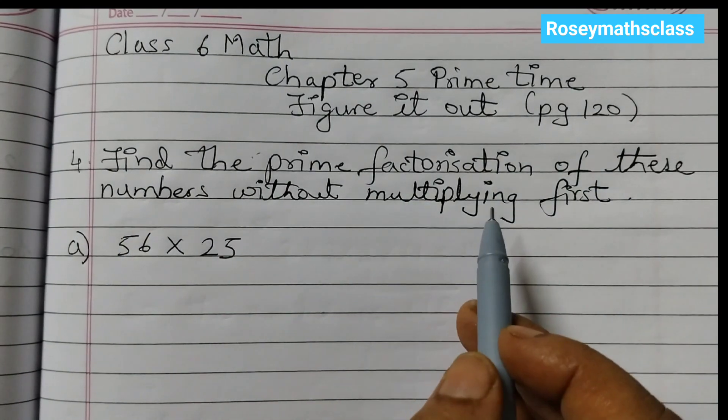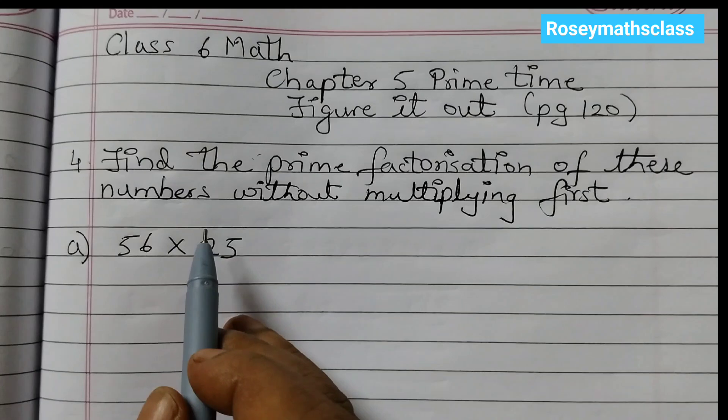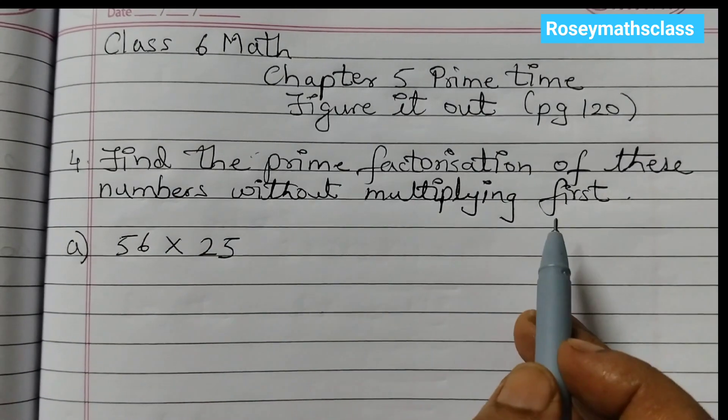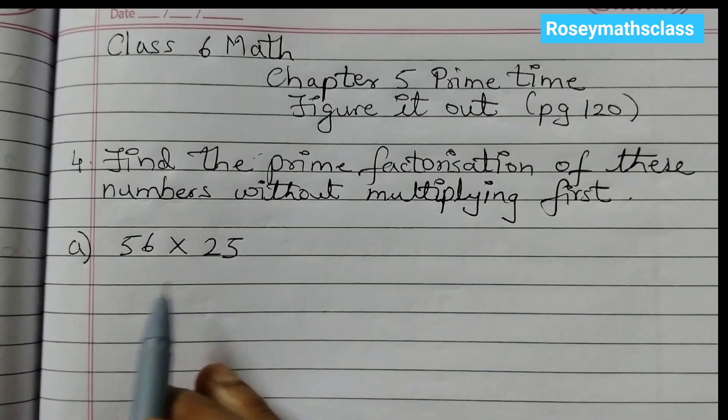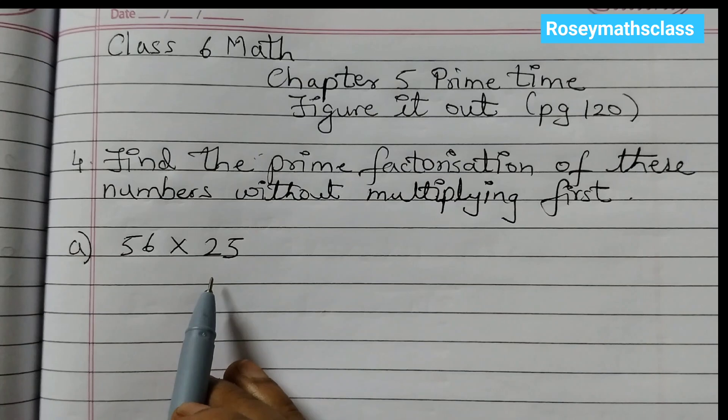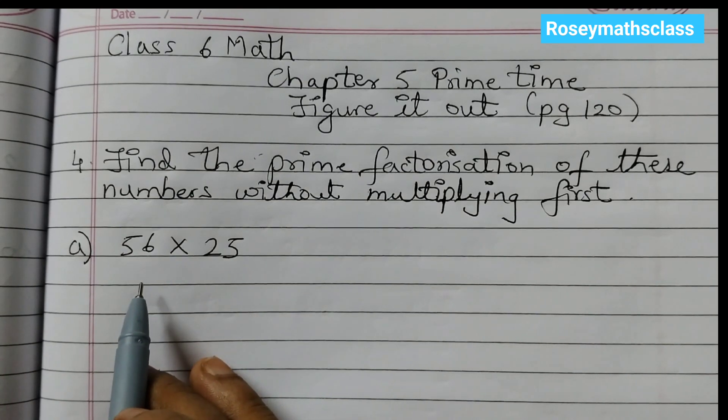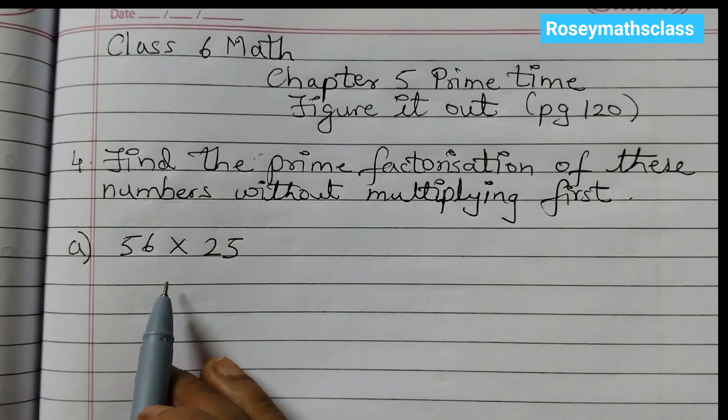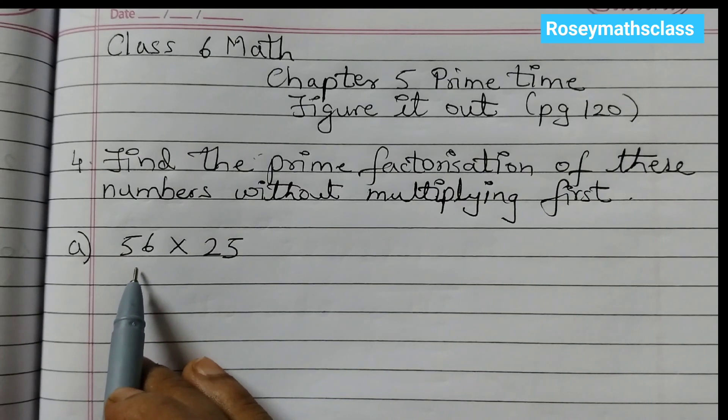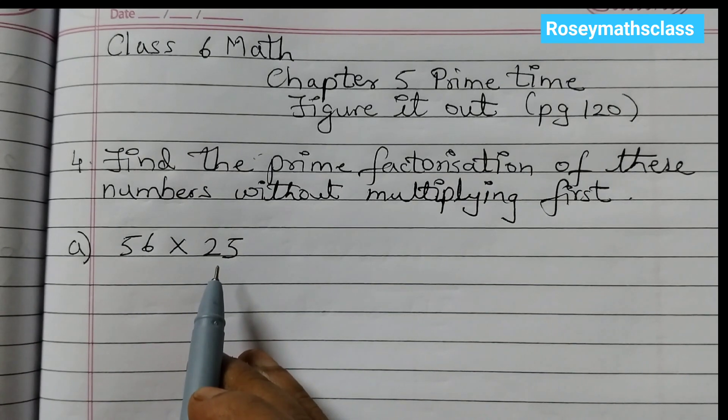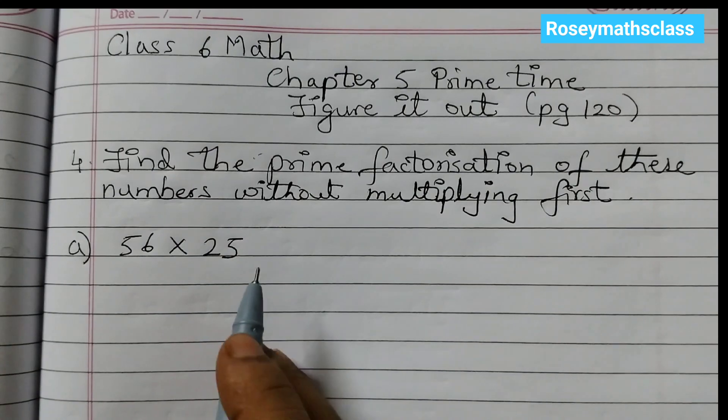Find the prime factorization of these numbers without multiplying first. Two numbers are given, 56 and 25. We did not multiply it, we need to find out the prime factorization. So what we can do is we can take first one number, find the prime factors, second number, find the prime factors, and just write it all together.